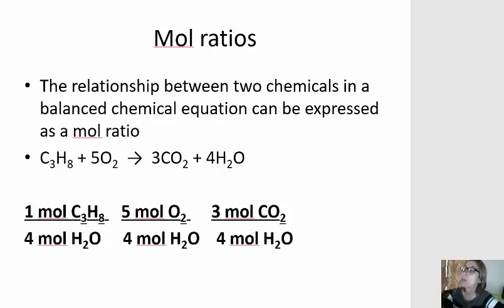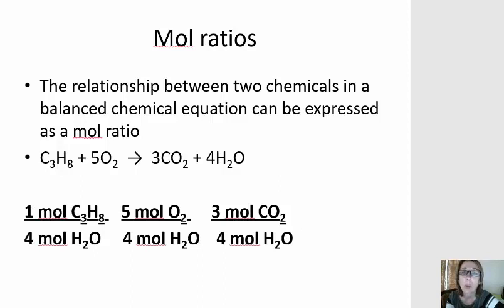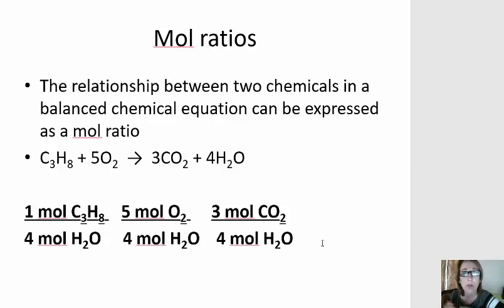So that is why we use what are known as mole ratios in stoichiometry. A mole ratio is the ratio of two different chemicals from the balanced chemical equation, which includes the coefficients as well as the mole to remind us that we're talking about moles. Here I have an example of three of the 12 possible mole ratios where water is in the denominator. In this balanced chemical equation, one mole of propane will always form four moles of water. When five moles of oxygen react, four moles of water always form. And when three moles of carbon dioxide are formed, four moles of water are also formed. So these mole ratios allow us to figure out relationships between different chemicals in a balanced chemical equation.